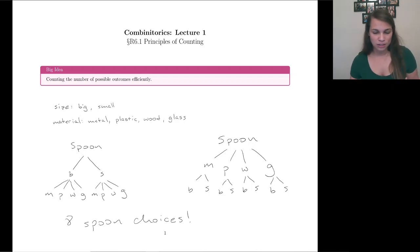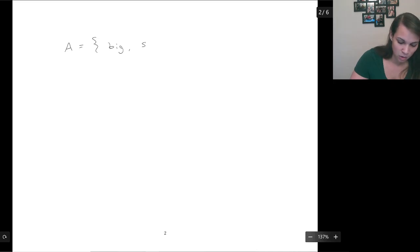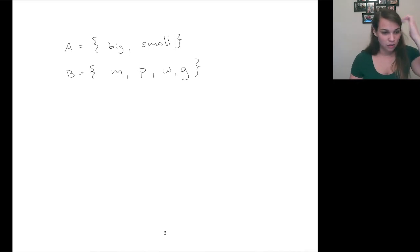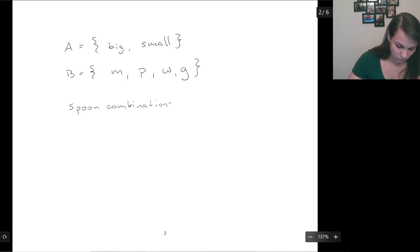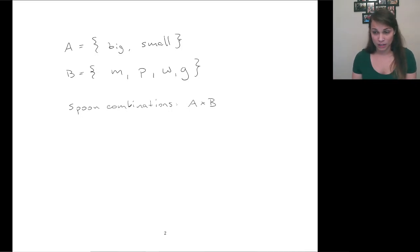This thinking about combinations and how many we can get is very closely related to the idea of a cross product. Let's put this in terms of sets. If A is the set {big, small} and B is the set of materials {metal, plastic, wood, glass}, then to get all the spoon combinations we would take the cross product. That gives us big paired with metal, plastic, wood, and glass, and small paired with metal, plastic, wood, and glass — every possible combination.